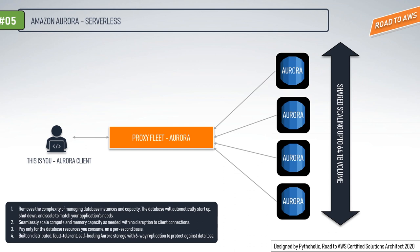You don't need to worry about modifications or changing your application to use the proxy fleet — Aurora Serverless manages connections automatically. Key points: it removes the complexity of managing database instances and capacity; the database automatically starts up, shuts down, and scales to match your application's needs; it seamlessly scales compute and memory with no disruption to client connections; you pay only for database resources consumed on a per-second basis; and it's built on distributed, fault-tolerant, self-healing Aurora storage with six-way replication to protect against data loss.